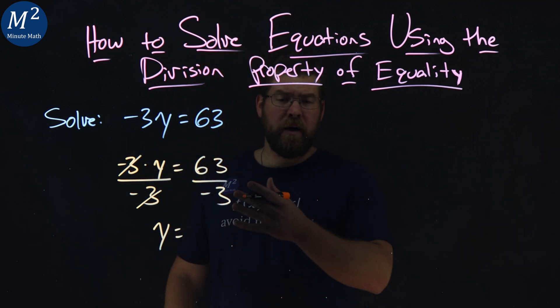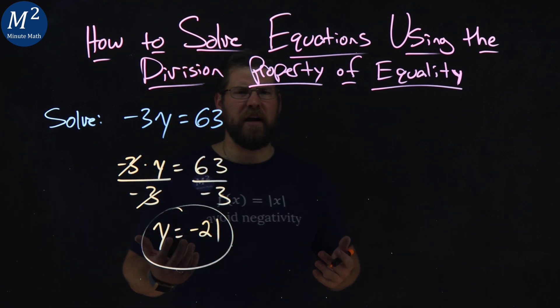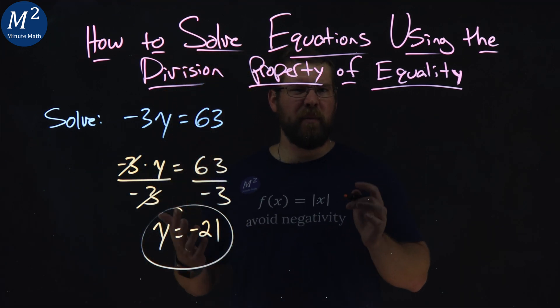Now, 63 divided by a negative 3 is negative 21. All right, well, we've got our answer here, y equals negative 21, but we've got to check it.